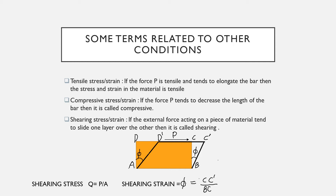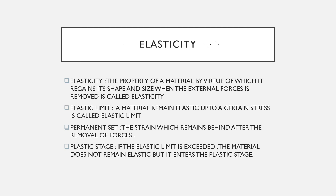Now let us understand elasticity. The property of a material by virtue of which it regains its shape and size when external forces are removed is called elasticity. Elastic limit is the value of stress up to which a material remains elastic. Permanent set is the strain which remains behind after the removal of forces. If the elastic limit is exceeded, the material enters the plastic stage.